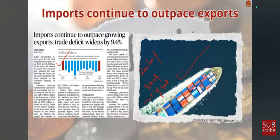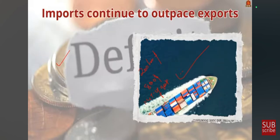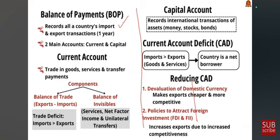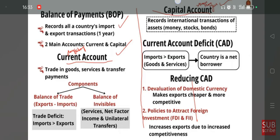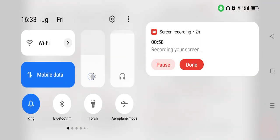In this news article discussion we shall see some basics about the balance of payments and then about current account deficit. The balance of payments is the record of all import and export transactions of a country during a period. The main accounts of the BOP are the capital account and the current account. The current account has day-to-day expenses, while the capital account covers receipts that are more than one year. Coming to the current account, it actually records trade in goods and services and transfer payments.